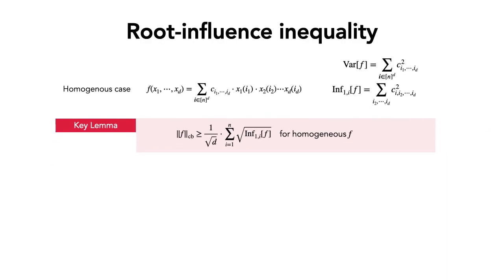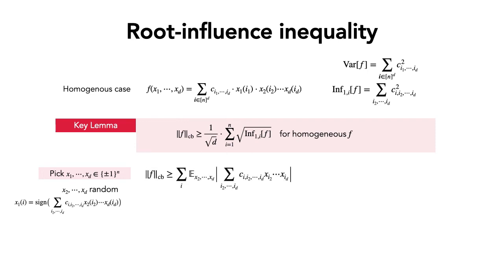The rest of the talk focuses on proving the root influence inequality. This lemma says the completely bounded norm is large, so we need a witness certifying it. We start by plugging in scalar ±1 values: we choose x_2 through x_d uniformly at random and choose x_1 according to the sign of the particular monomial in front of it. Taking expectations, the completely bounded norm is lower bounded by the sum over indices of the first block of the expected absolute value of the inner degree-(d−1) polynomial.